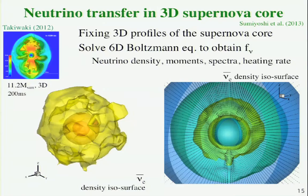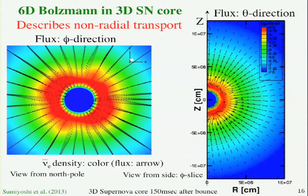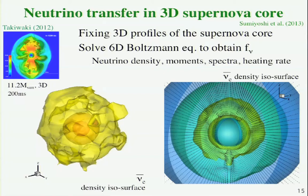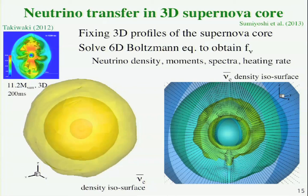Some results from our calculation. We fixed the 3D profiles of the supernova core taken from Takiwaki's simulation. And then we solved the 6D Boltzmann equation to obtain the stationary neutrino distribution. This is the initial distribution of neutrinos. And this is the isosurface of the electron antineutrino. Neutrinos is propagating in three-dimensional way. We get all the information, the density moments, spectrum, and so on. This is the isosurface of the neutrinos having the spherical and some deformed non-spherical layers of the isosurface.